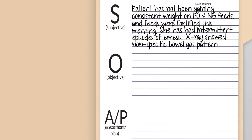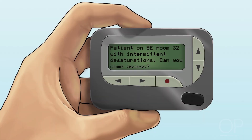You've just gotten sign-out from the day team and are running through vitals and labs. Her last heart rate was 140, oxygen saturation 82% on room air, respiratory rate was 36, and blood pressure is 60 over 32 with a MAP of 40. You're about to go get some dinner, and you receive a page from the nurse: Jessica in room 32 with intermittent DSATs — can you come assess?